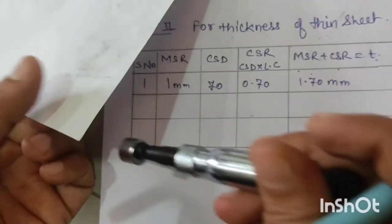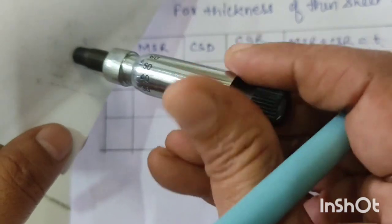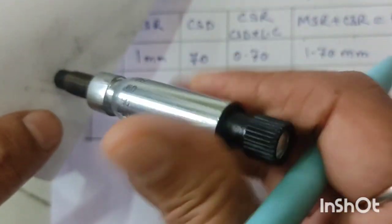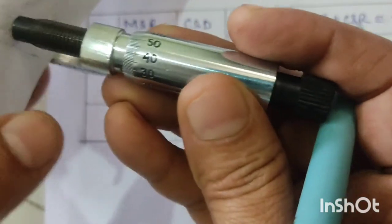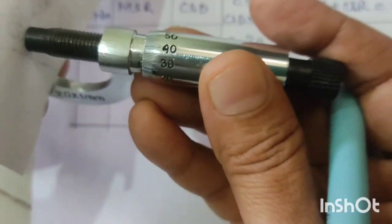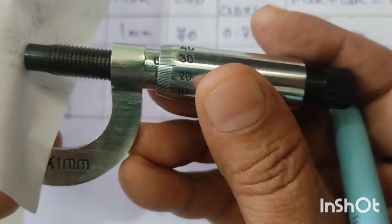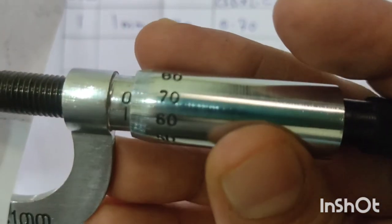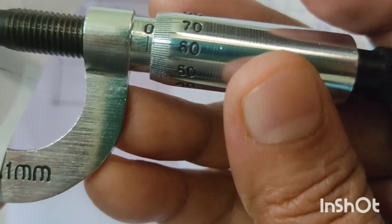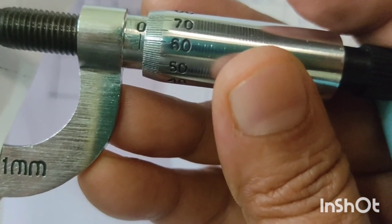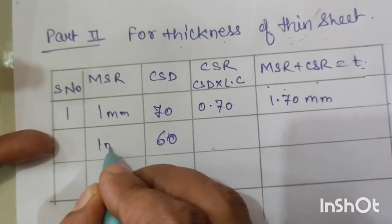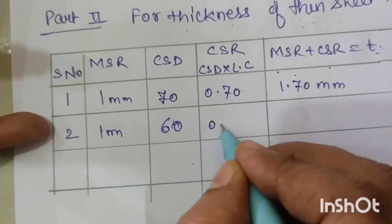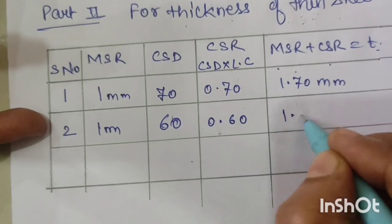Changing the position of the paper for the second reading: MSR is again 1 mm and CSD is now 60. CSR = 60 × 0.01 = 0.60 mm. Total reading = 1 + 0.60 = 1.60 mm.